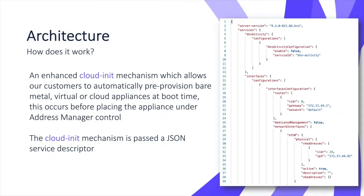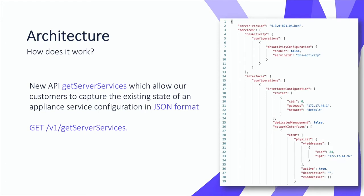The next important part of the architecture supporting our provisioning mechanism is Cloud Init. Integrity 9.3 greatly enhances our capabilities by allowing us to pass our new JSON service descriptor, defining far more settings than ever before. The final part of the architecture is a series of new API calls which allow for the reconfiguration of services on individual or many appliances in the customer's appliance fleet at once.